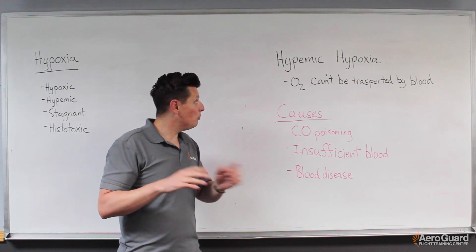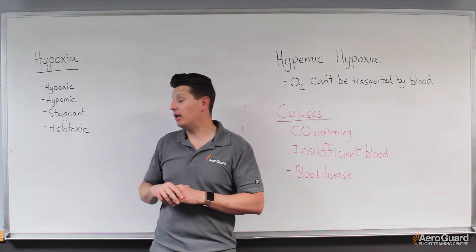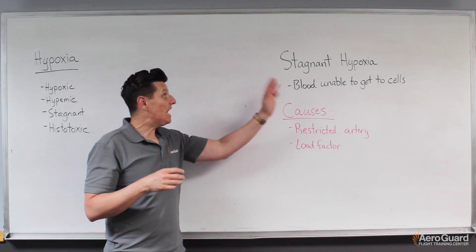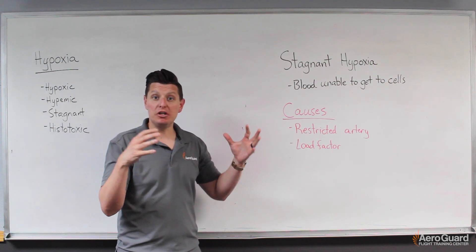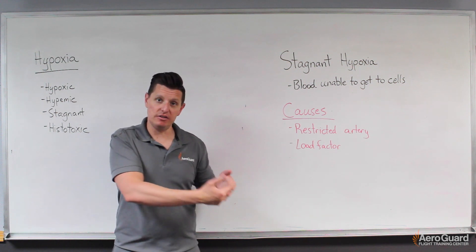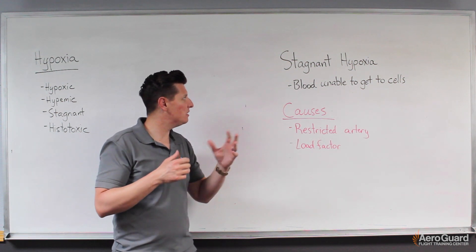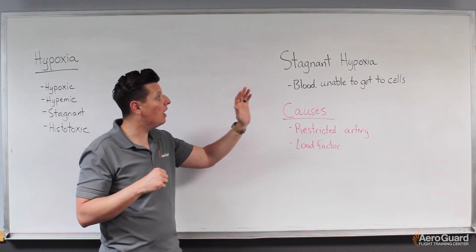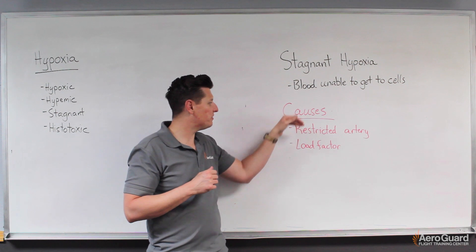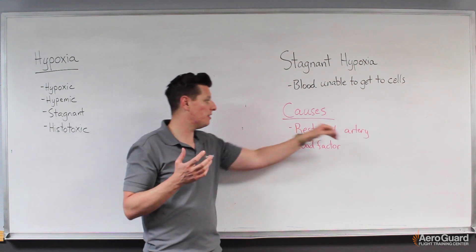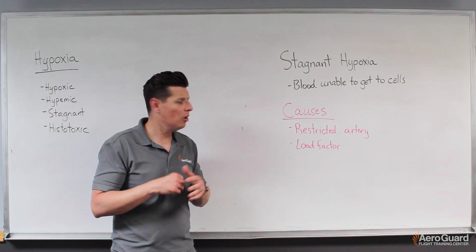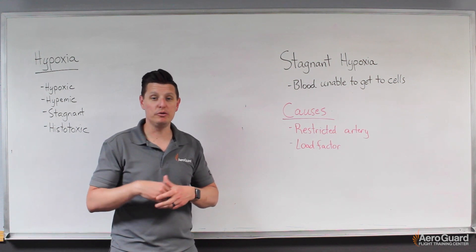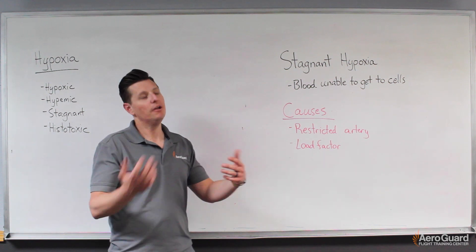Now we'll talk about the third type: stagnant hypoxia. With stagnant hypoxia, we have oxygen in the blood, but it can't make it to the cells that need it. The word stagnant means stable or not moving. A simple example is when you sit for too long, cut off blood flow, stand up and say your foot fell asleep — that's an example of stagnant blood flow.